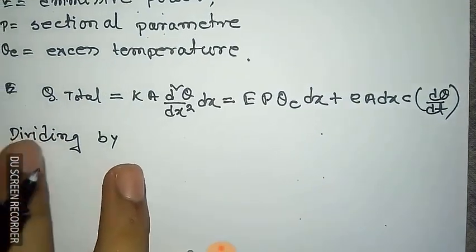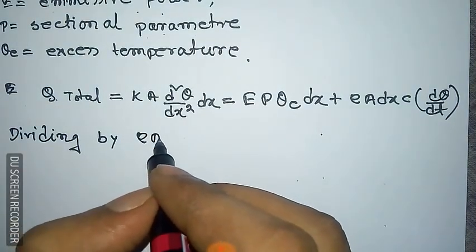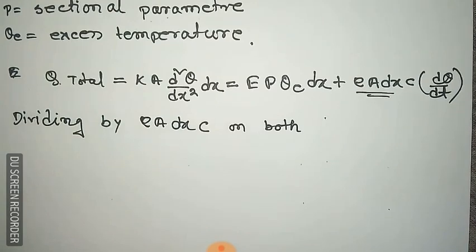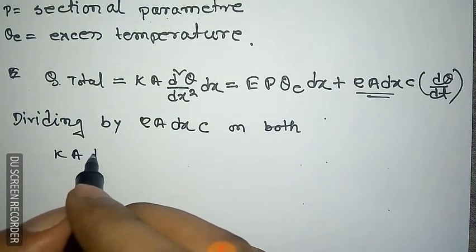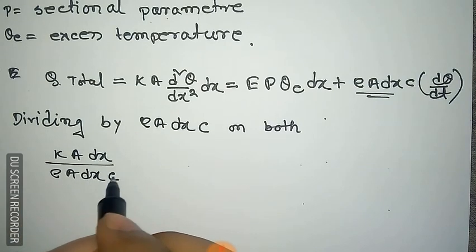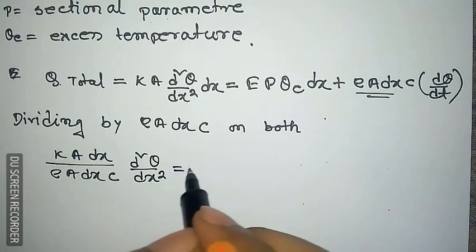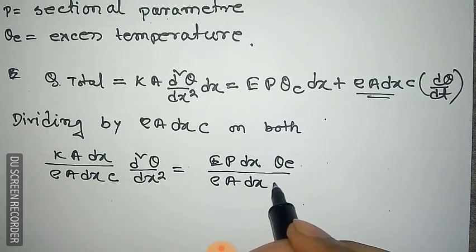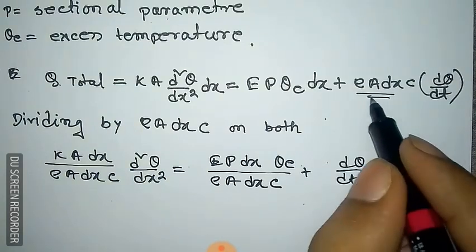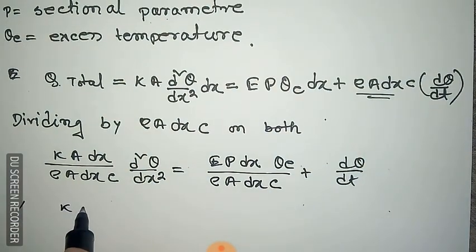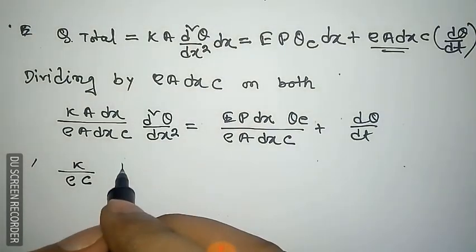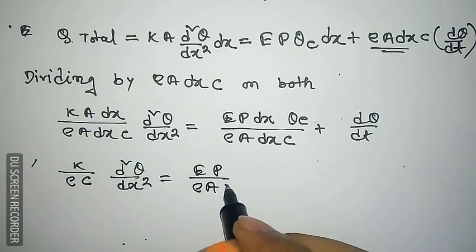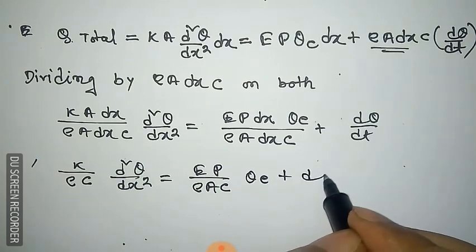Dividing the whole equation by rho A dx c, the equation becomes: (k / rho c) (d² theta / dx²) = (e p / rho A c) theta_e + (d theta / dt). Here A cancels with A, and dx cancels with dx, leaving k / rho c times d² theta / dx² equal to (e p / rho A c) theta_e plus d theta / dt.